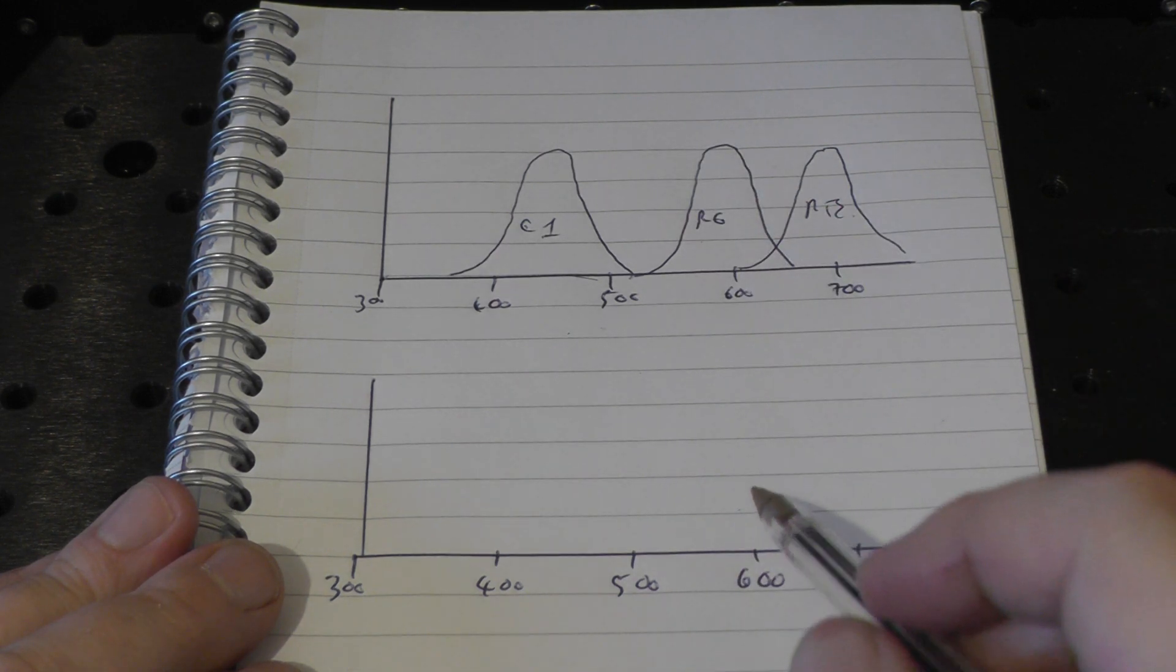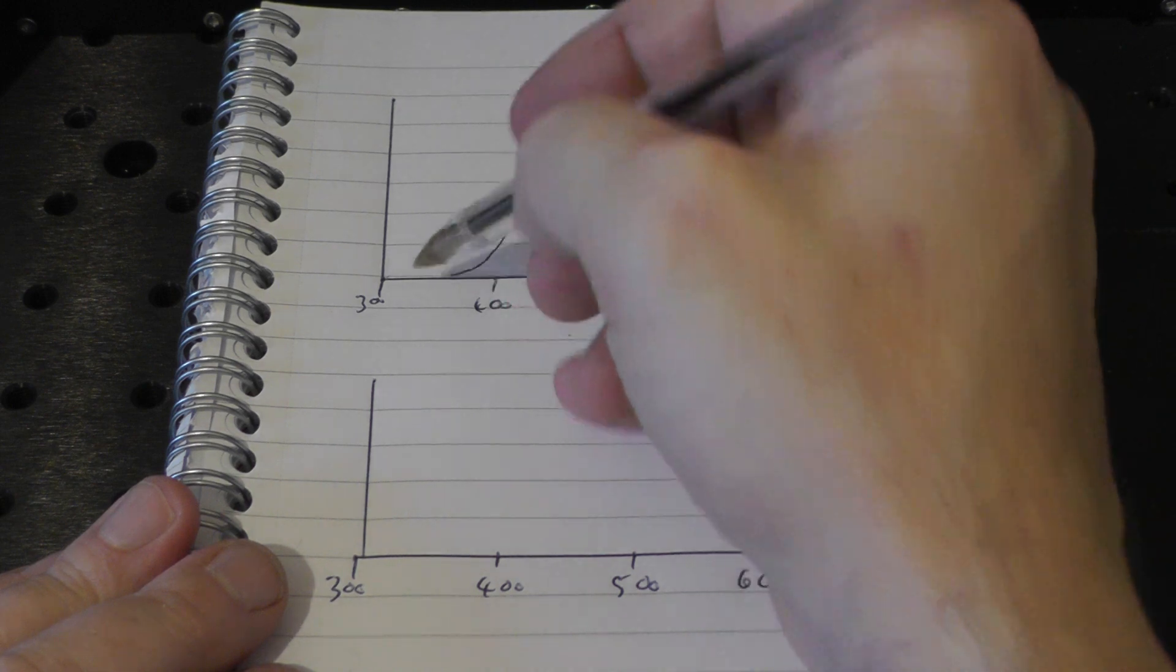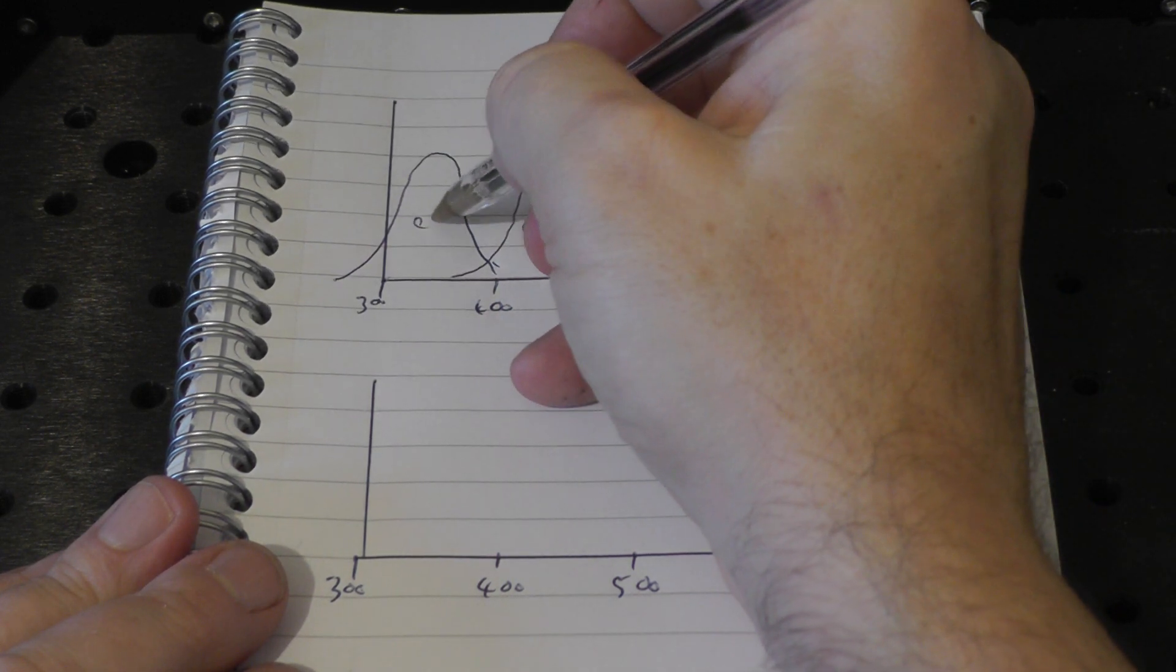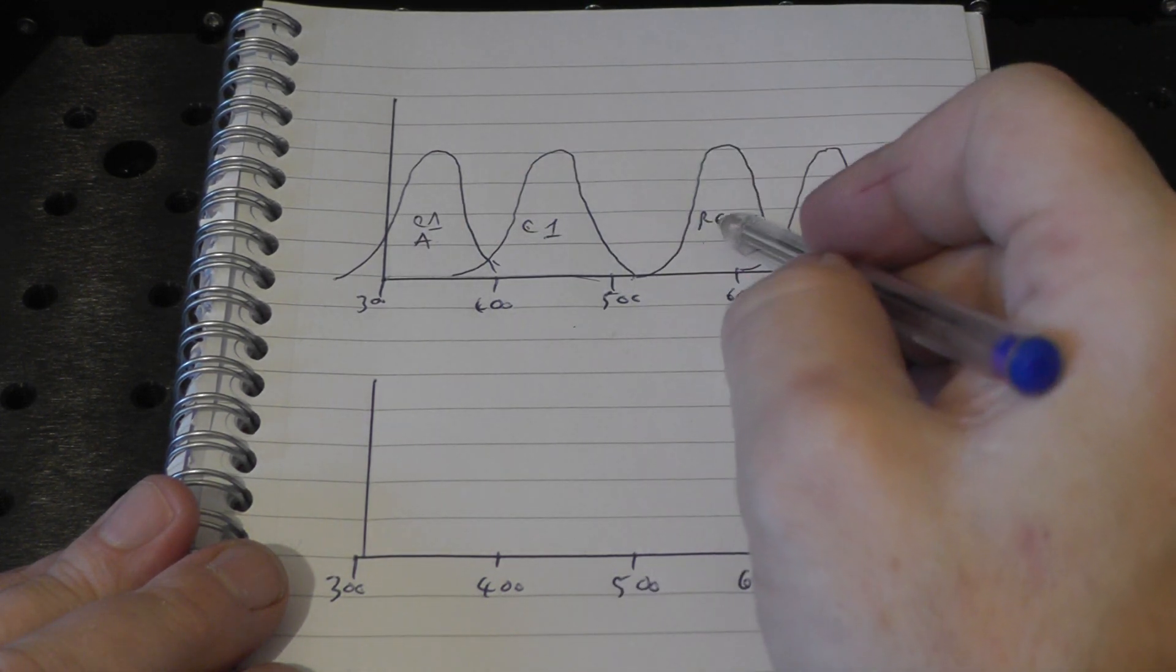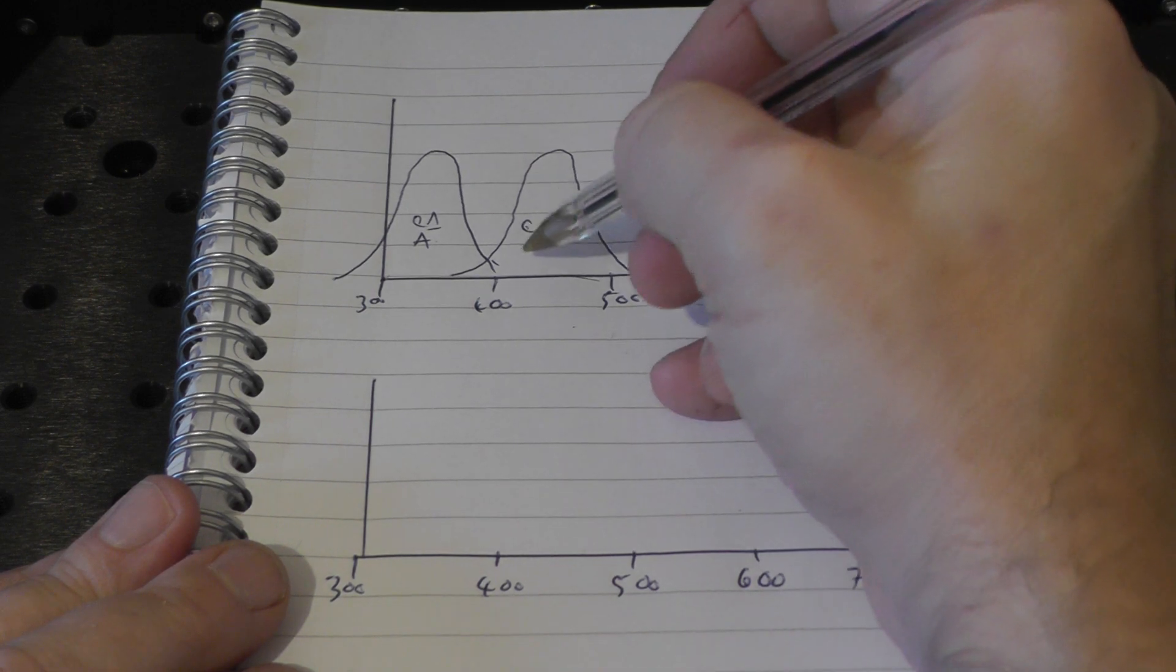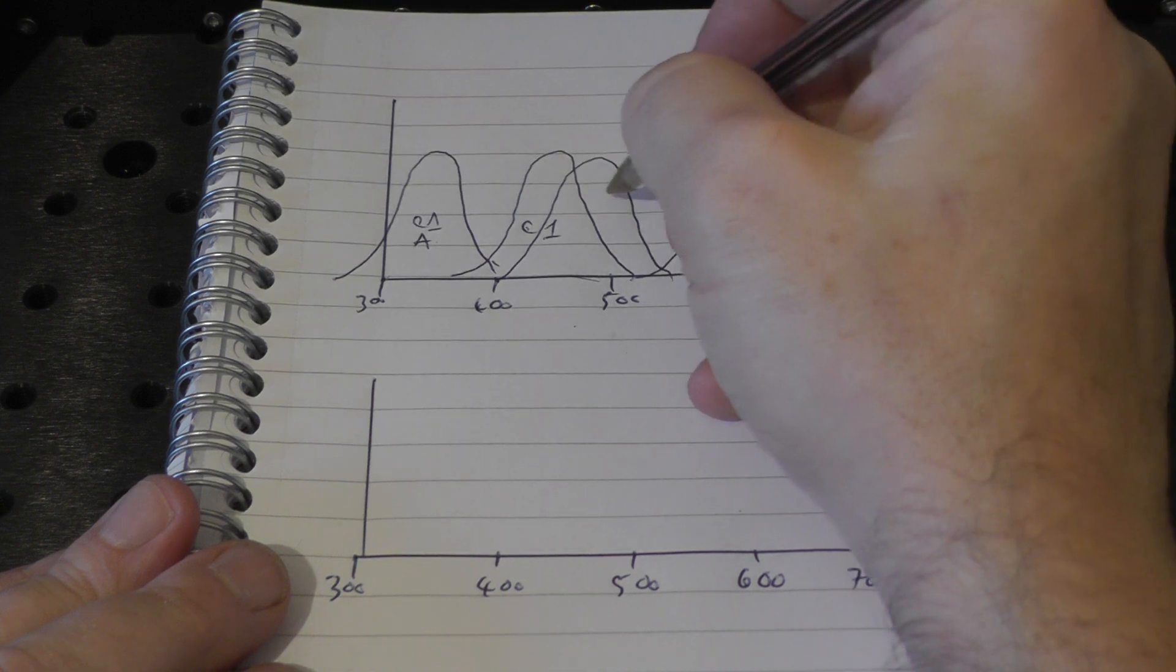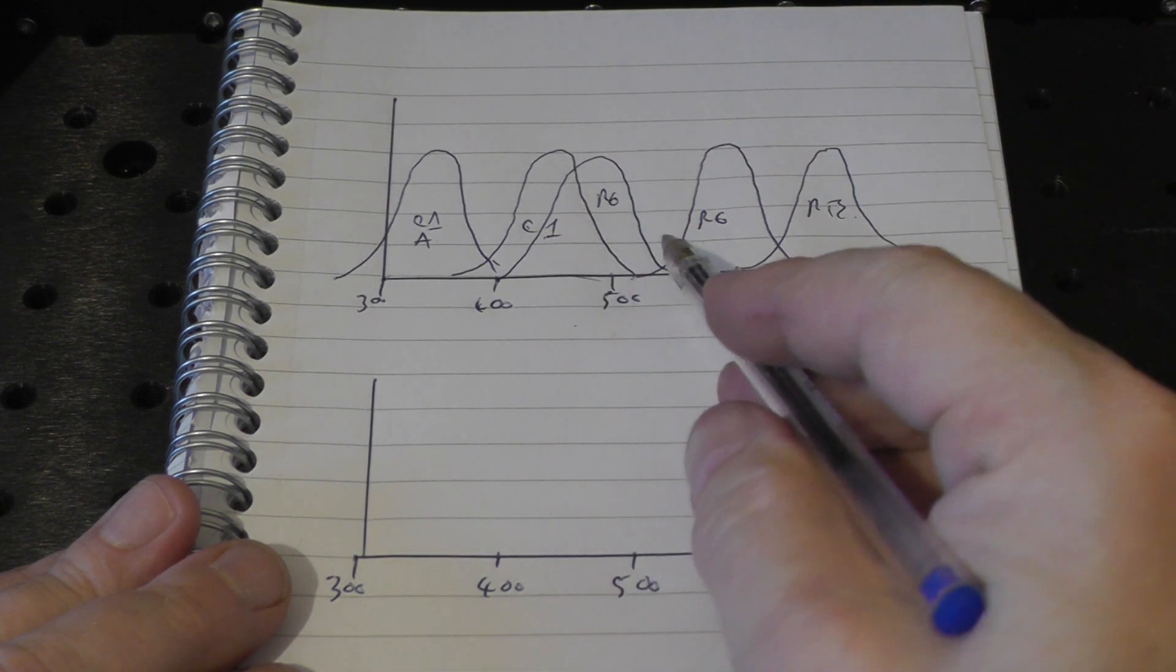But there's something else we need to take into consideration and that's the absorption curves as well. So Coumarin 1 likes to absorb in the ultraviolet way down here. So there's Coumarin 1's absorption curve. So far so good. Rhodamine 6G's absorption curve overlaps the emission curve for Coumarin 1. So now we have a problem in that if we try and run Rhodamine and Coumarin 1 in the same cuvette,